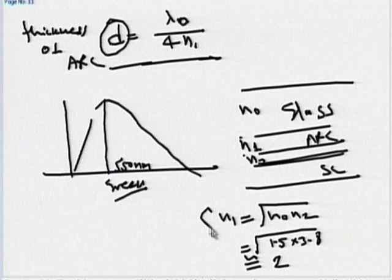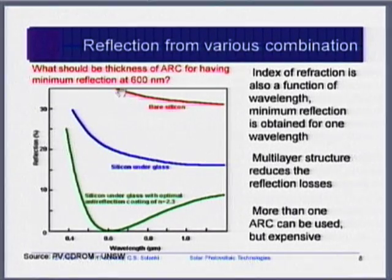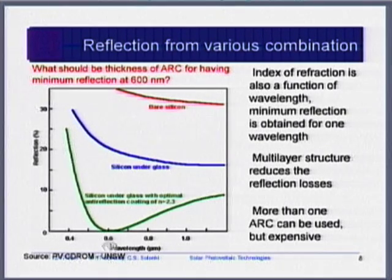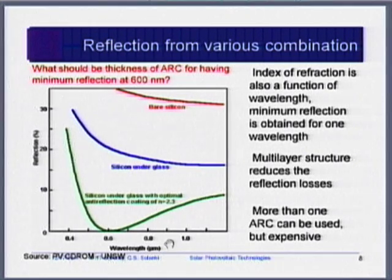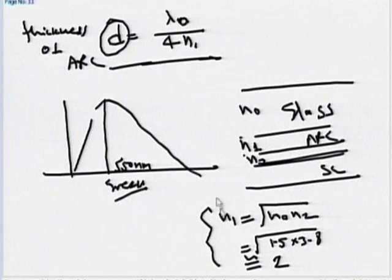The refractive index of glass is 1.5 and of silicon is 3.8. Therefore the square root of 1.5 times 3.8 is about 2. So the refractive index of your anti-reflective coating should be about 2. For bare silicon the reflection is very high; under glass it is reduced; and with anti-reflective coating, reflection for a particular wavelength can be minimized significantly.